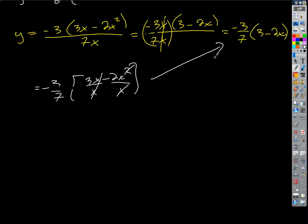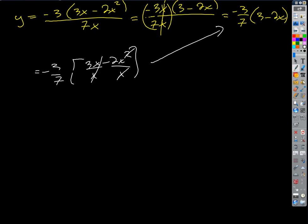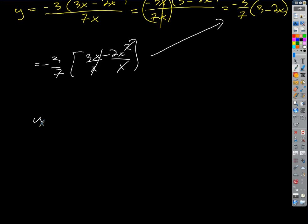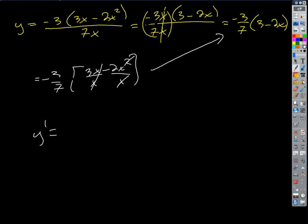Right? And that's much easier to differentiate than a quotient rule. Okay? So what are we going to get if we calculate y prime, then? We've got our negative 3 sevenths. What's the derivative of 3 minus 2x? Negative 2. Negative 2. So our answer is just 6 sevenths. Much easier, though, right? And we don't have to go through that whole quotient rule. Okay? So simplify when you can.